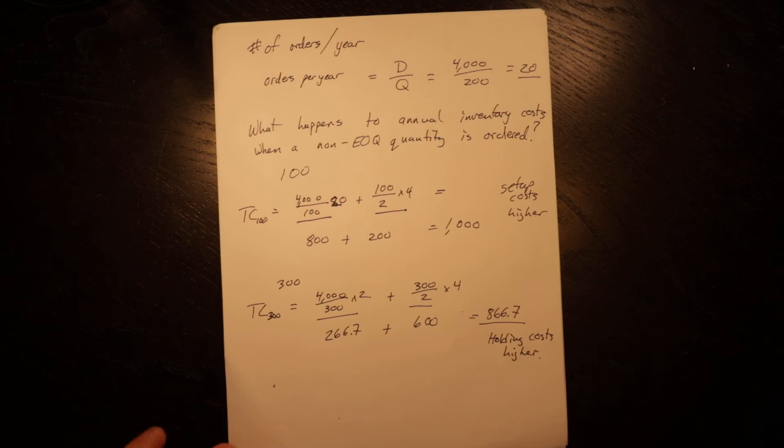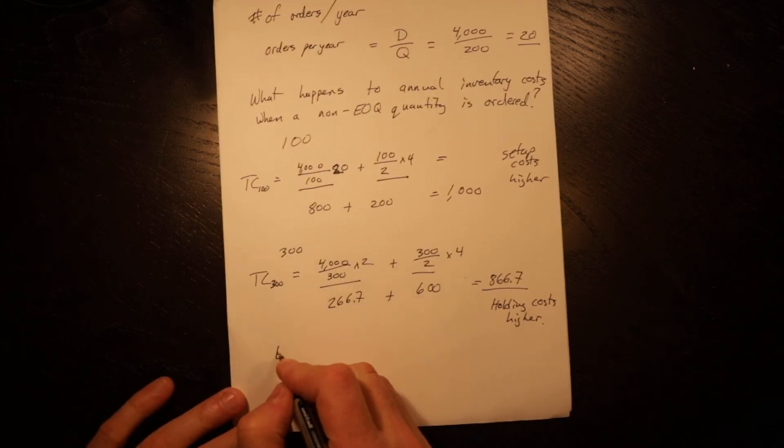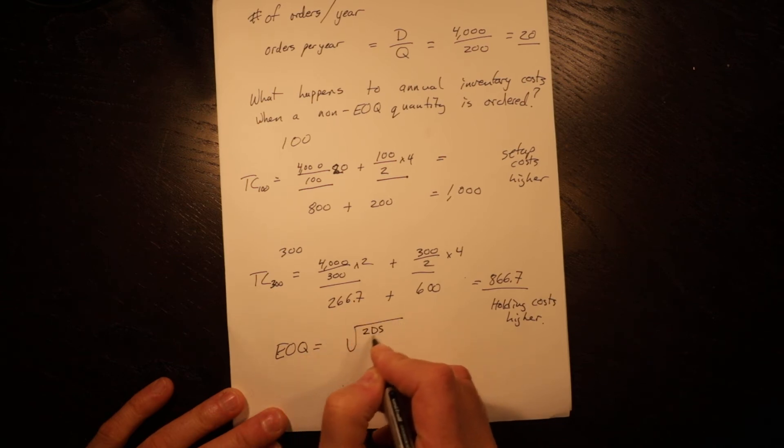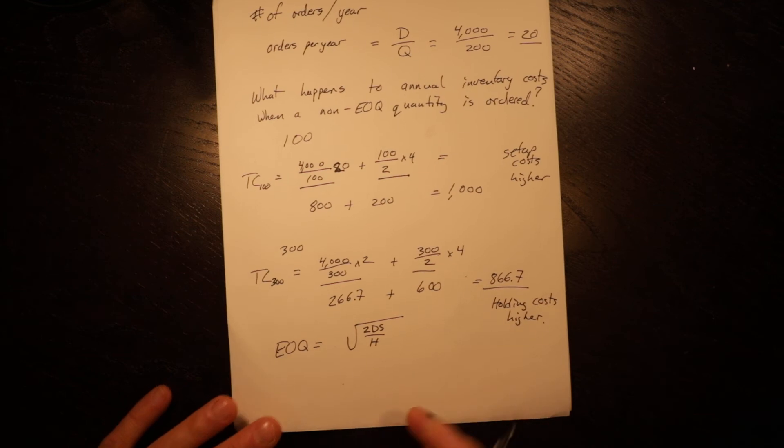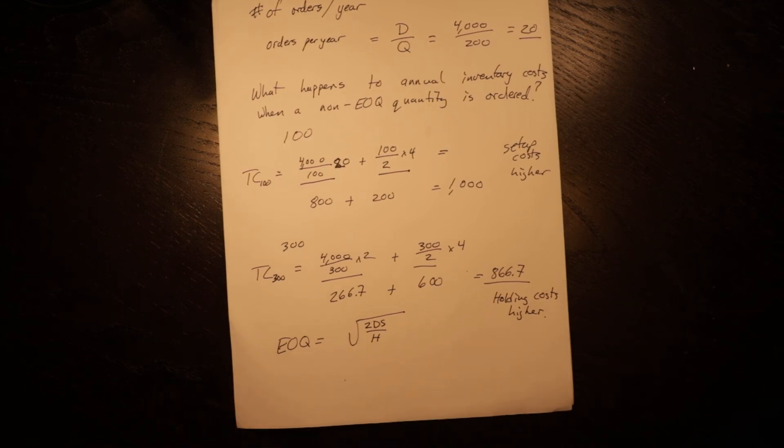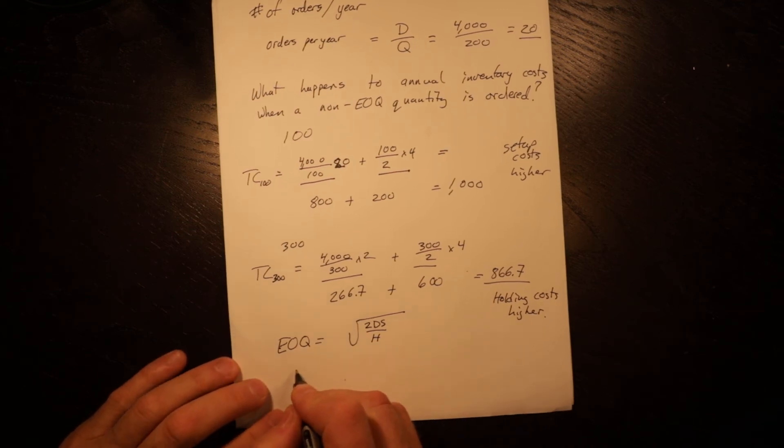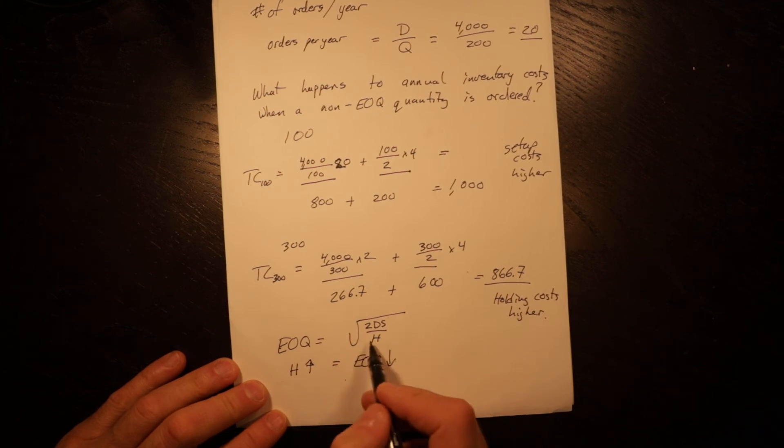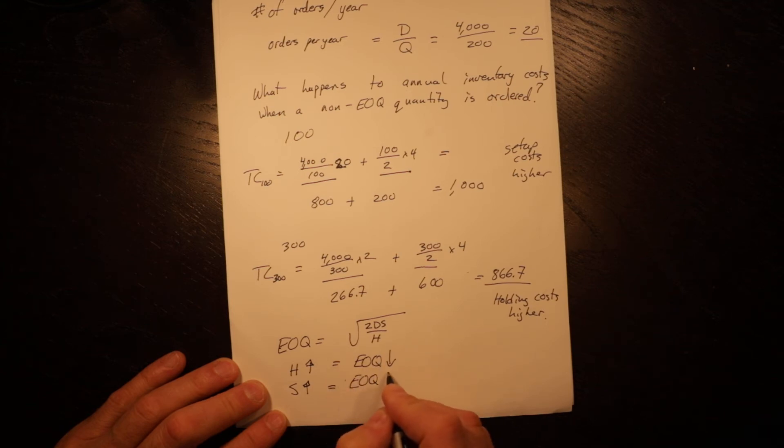If you go back to the EOQ formula, EOQ equals the square root of 2DS over H. Even if you don't know what all of the factors are, you know that if H goes up, so if holding costs go up, EOQ goes down. That number goes down.